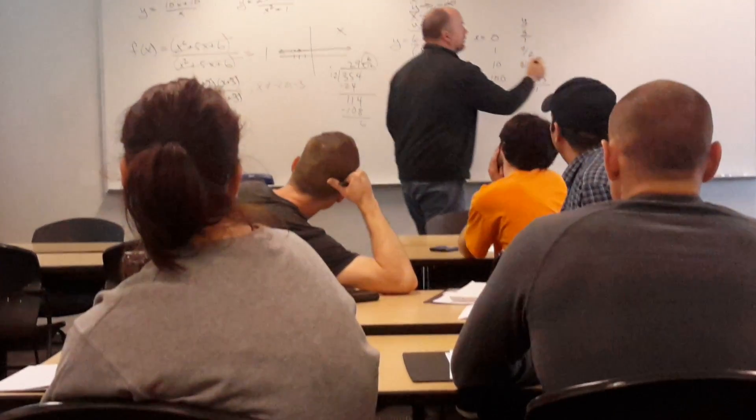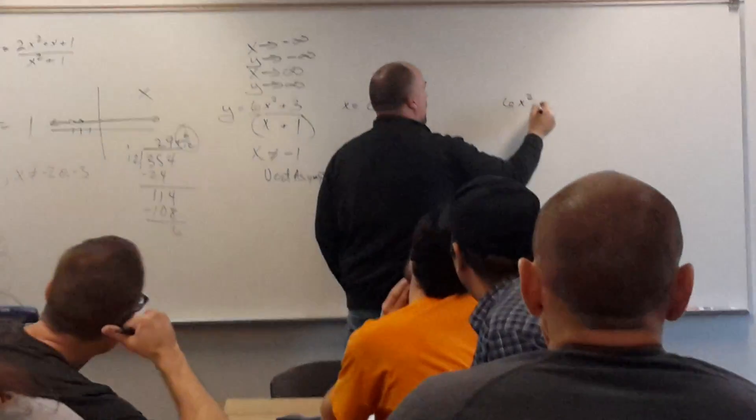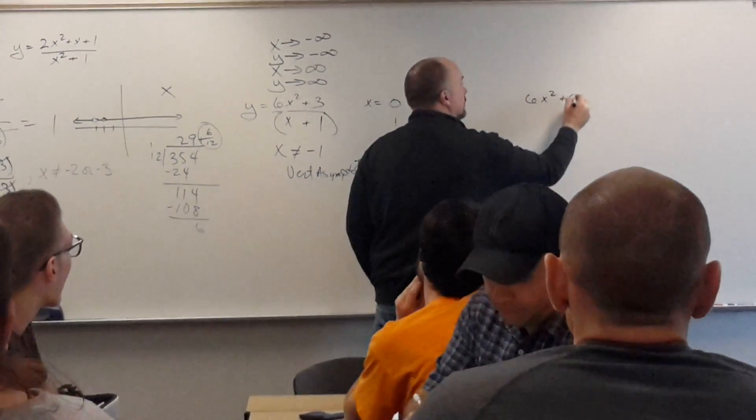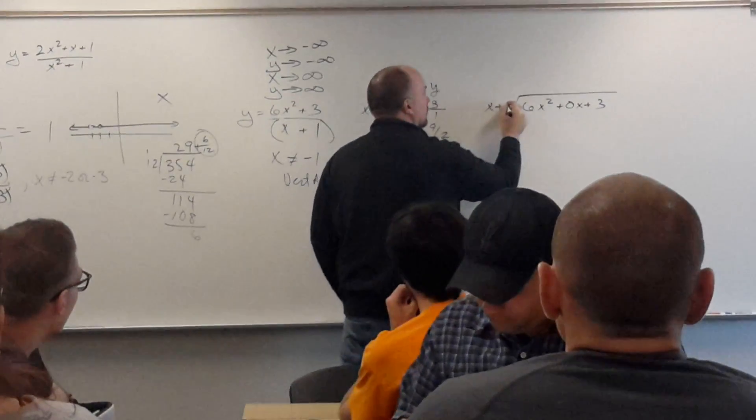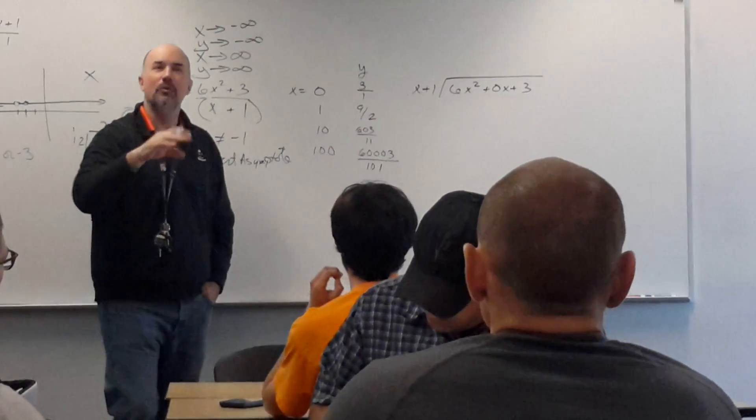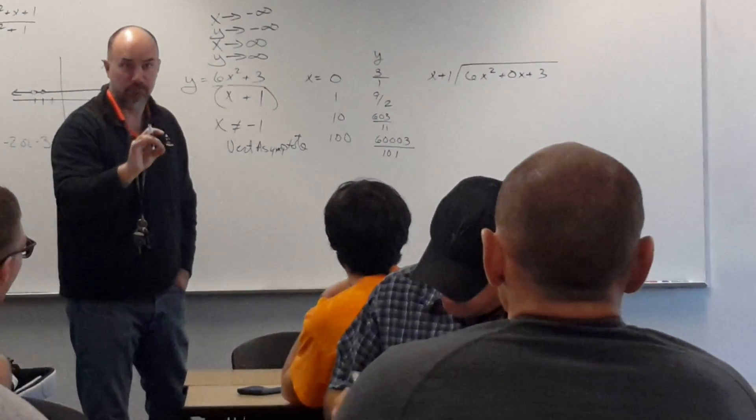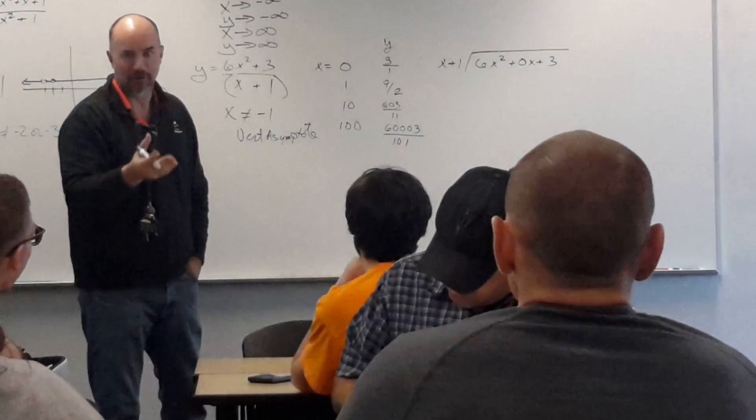I'm going to divide these out. I'm going to take 6x squared plus 0x plus 3, and I'm going to divide that by x plus 1. Notice I threw in a zero there to hold the missing term. You're going to want to do that if you ever have to do this by hand.